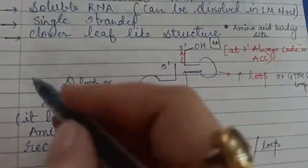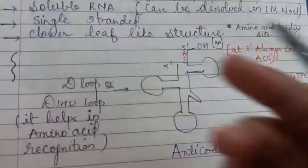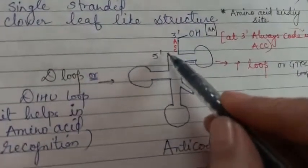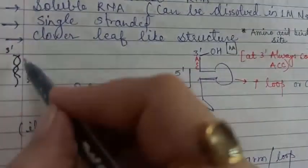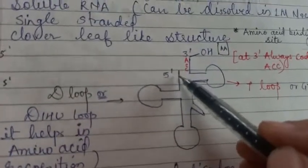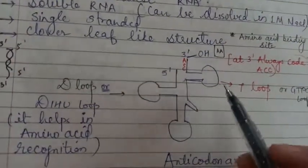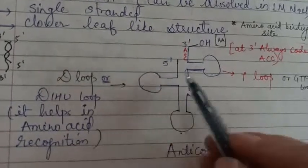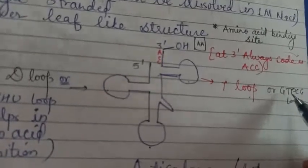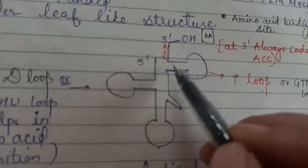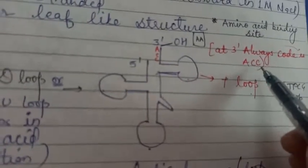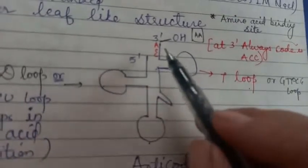This structure shows the amino acid binding site. DNA has a double stranded structure with two ribbons tied in a spiral type. But RNA has only one spiral, five dash to three dash. There are antiparallel two strands in DNA - three dash to five dash and five dash to three dash. Here there is only one strand, five dash to three dash. Here at this end an OH is attached. At the three dash end where hydroxyl group is present, it always codes for ACC, that is adenine cytosine cytosine. And this is the amino acid binding site.